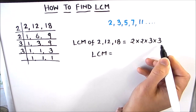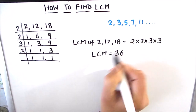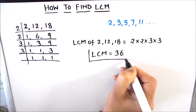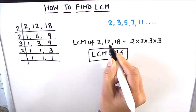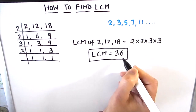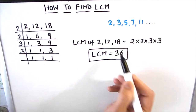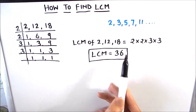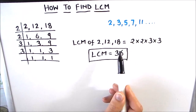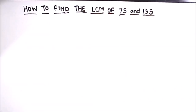Calculating: 2 × 2 = 4, 4 × 3 = 12, and 12 × 3 = 36. So the LCM of 2, 12, and 18 is 36 — meaning 36 appears in the tables of 2, 12, and 18. You can verify: 2 × 18 = 36, 12 × 3 = 36. The LCM of these three numbers is 36.